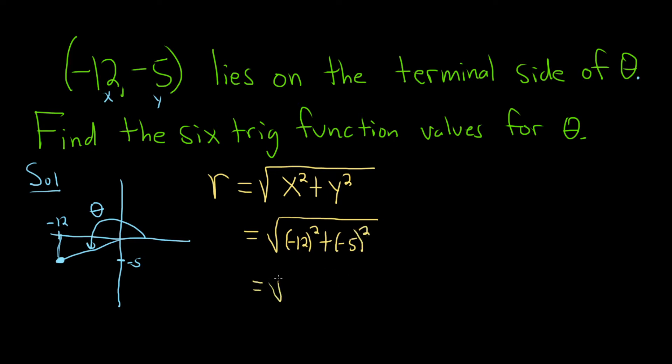This is equal to the square root of, so negative 12 squared is 144 and negative 5 squared is 25. So when we add these we get the square root of 169 and that's equal to 13. So we know that r is equal to 13.